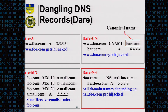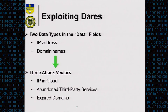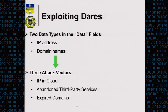Similar situations apply to MX and NS records as well — you can either directly obtain the IP address and do the hijacking, or operate at the domain naming level. There are two types of data in the data field: IP address or domain name. Either obtain the IP address or claim ownership of the domain names — those are the two attack targets.